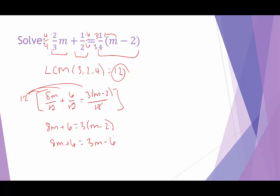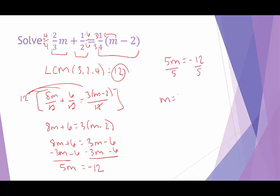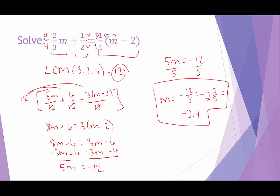Now I'm going to move all variable terms to the left-hand side by subtracting 3m from both sides, and subtract 6 from both sides to move the constants to the right. 8m minus 3m is 5m, and negative 6 minus 6 is negative 12. To get m completely by itself, I divide both sides by 5, and I end up with negative 12 over 5. You can also write this as the mixed number negative 2 and 2/5, or as the decimal negative 2.4 — any of those three forms are acceptable.